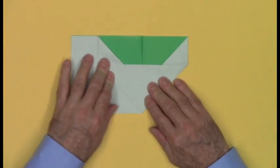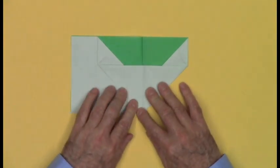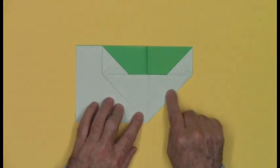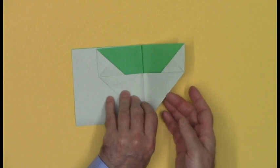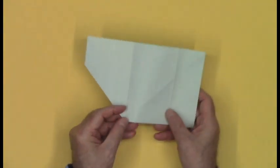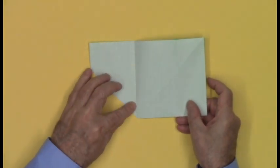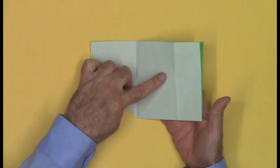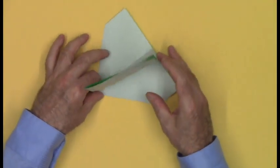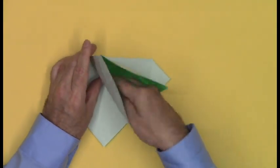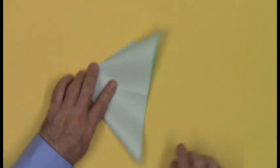Squash it symmetrically. The creases are actually already there for you to have this shape. Turn the paper over to the other side. Here's a hinge. We're going to squash fold this rectangular flap, lifting it up, open, and flatten.